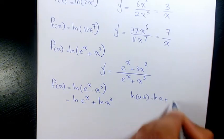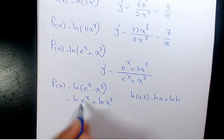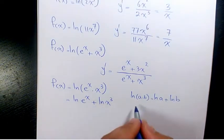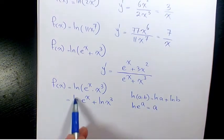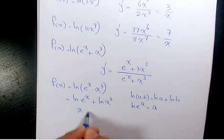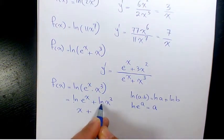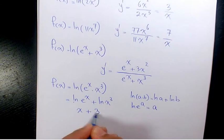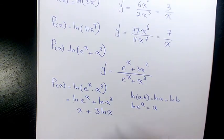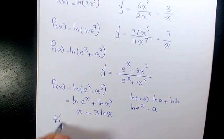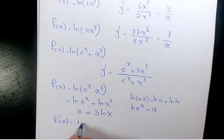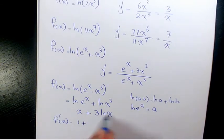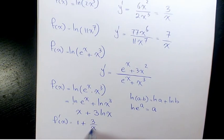We know that ln of a times b equals ln of a plus ln of b, so we have the same thing here. We also know that ln of e to the power of a equals a. So ln of e to the power of x is just x, plus ln of x to the power of 3, which you can write as 3 ln x. Now the derivative will be: the derivative of x is 1, and the derivative of 3 ln x is going to be 3 over x.